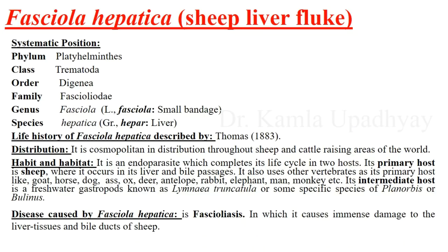Fasciola hepatica is commonly called the sheep liver fluke because it is commonly found in the liver of sheep — that's why the name 'sheep liver fluke' is given. Before going into detail about its life cycle, let's see its systematic position. Fasciola hepatica is kept in phylum Platyhelminthes.